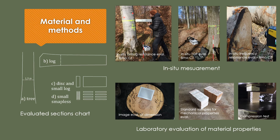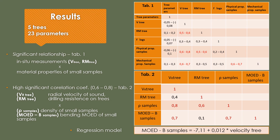In the laboratory, small samples were evaluated for verification by frequency-resonant methods and standard destructive tests. In total, 23 parameters from five trees were compared. The analysis showed a correlation between values from in-situ and laboratory work. High significant correlation was found between radial velocity of zones and bending MOE.